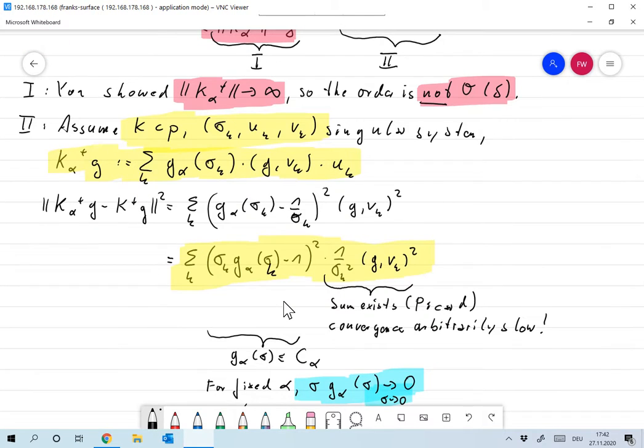Now, we proved that this goes to zero under the condition that sigma times G alpha of sigma is bounded above by some constant, which does not depend on neither sigma or alpha. So this is smaller than that constant squared times the sum over all K, one over sigma K squared, G and VK squared. And this one converges and that was Picard's condition. So we have convergence and that's it.